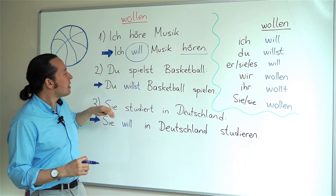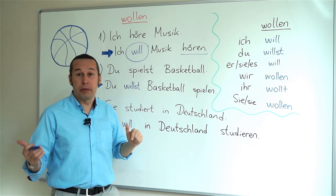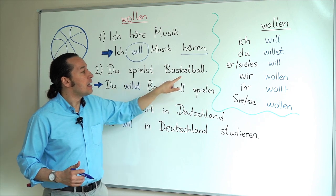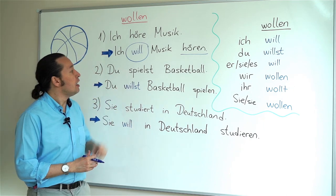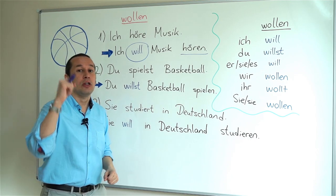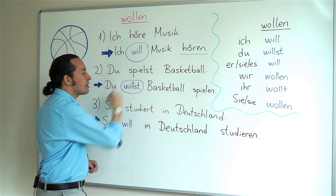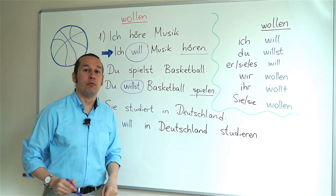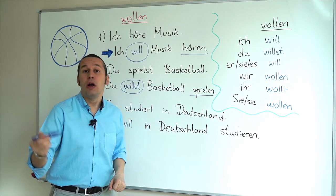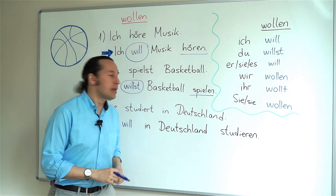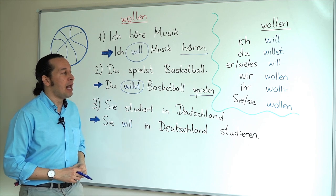When we look at the next example, we have the sentence: du spielst Basketball — you play basketball. Spielen stands for playing. What do I do if I want to conjugate wollen? Easy — du willst. So I'll say: du willst Basketball spielen. The main verb spielen remains in the infinitive form. You want to play basketball: du willst Basketball spielen.